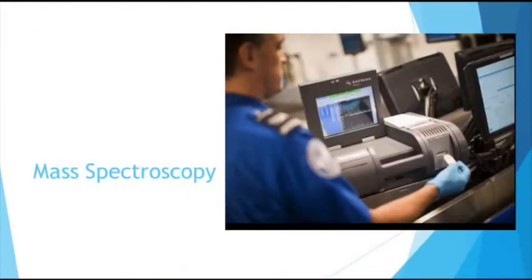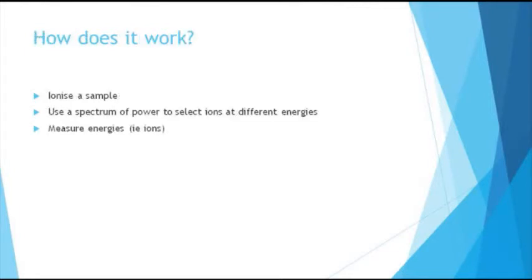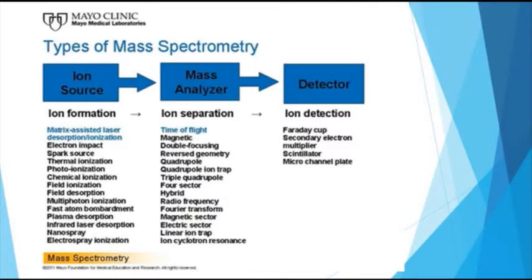Right, on to mass spectroscopy. You may know mass spectroscopy from airports. So after they do the kind of swabs of your equipment and things and put them in a machine, that machine is a mass spectrometer. What it basically tells you is what's in a sample. It breaks down a sample and tells you what's actually in there. How does it work? So basically you ionize a sample. So you give it a charge, you break it down and give it a charge. And then you use a spectrum of power, hence mass spectroscopy, to select the ions at different energies and masses. So you know how heavy it is and how charged it is. And then you measure it. So there are different types of mass spectroscopy, but basically they all break down into these three stages. Creating ions, splitting ions, and then measuring them. And there are various different ways to do each stages.